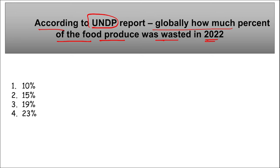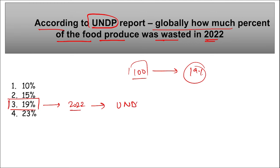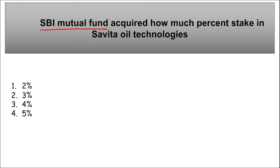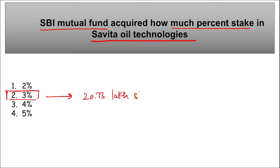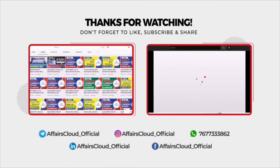According to the UN Environment Programme (UNEP) report, globally 19 percent of the food produced was wasted in 2022. UNEP's headquarters is in Nairobi, Kenya. SBI Mutual Fund acquired a 3 percent stake in Savita Oil Technologies Limited, equivalent to 20.73 lakh shares.